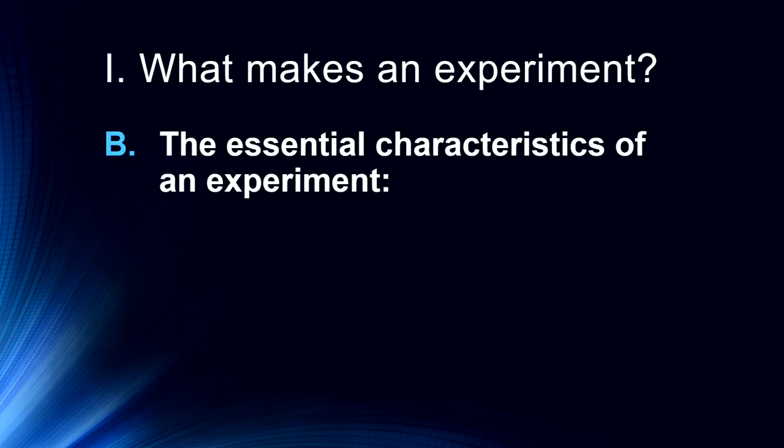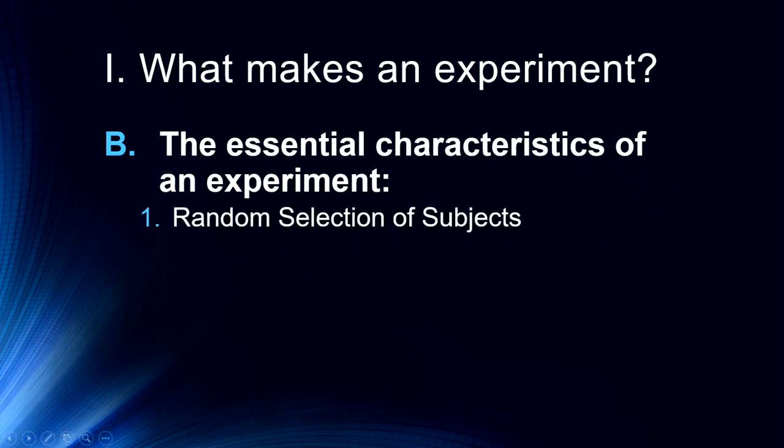The essential characteristics of an experiment include preferably the random selection of subjects from a research pool. This is probably the biggest failure of most experiments in that we kind of end up with who we end up with. A number of problems with psychological research is it tends to involve what we call WEIRD subjects — those from Western societies which are industrial, educated, rich, and democratic. In the perfect experiment, we would have random selection of subjects.